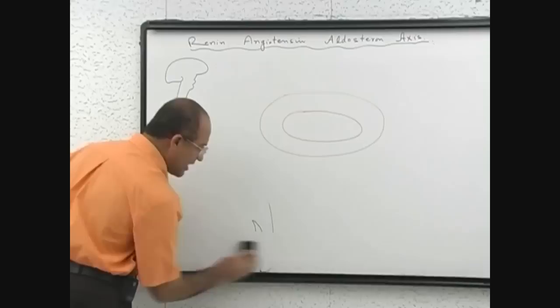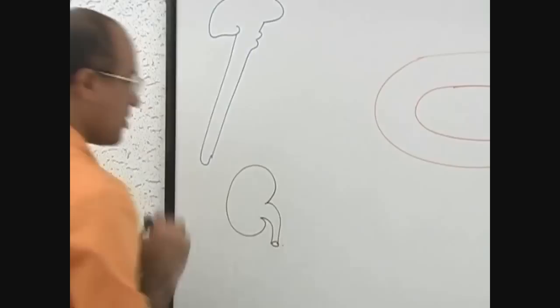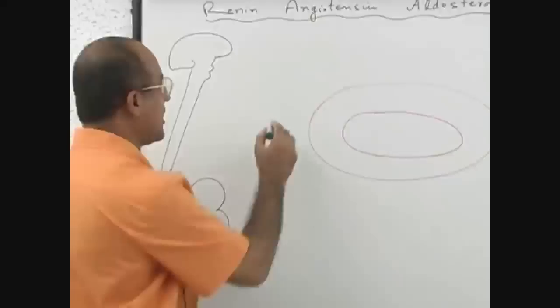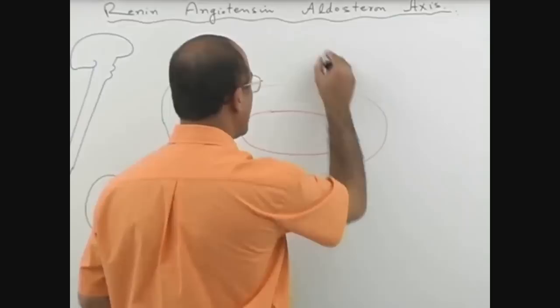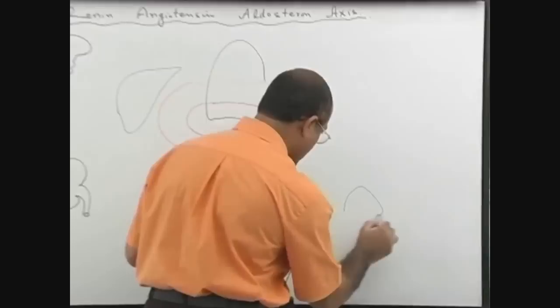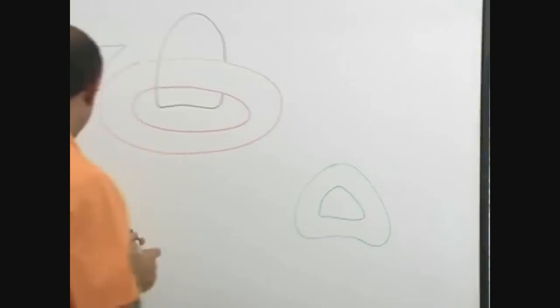We will talk about the kidney. Rather than drawing the full kidney, we will draw a nephron here. Then there is a role played by the liver. And then very important role is played by pulmonary circulatory system. And of course we will not forget the role which is played by adrenal cortex.